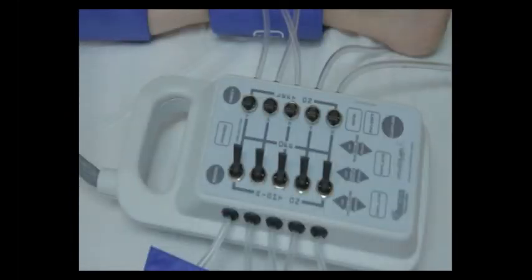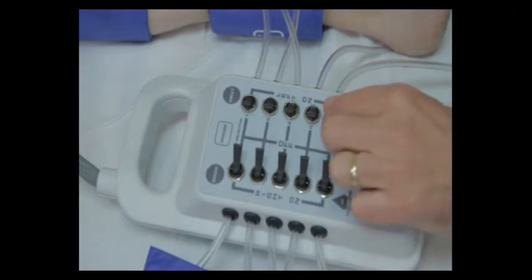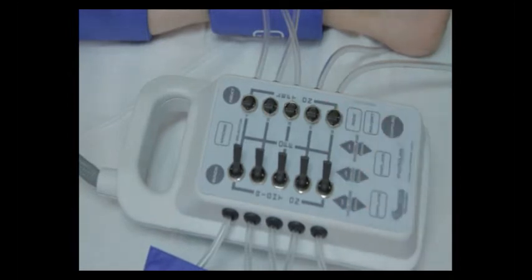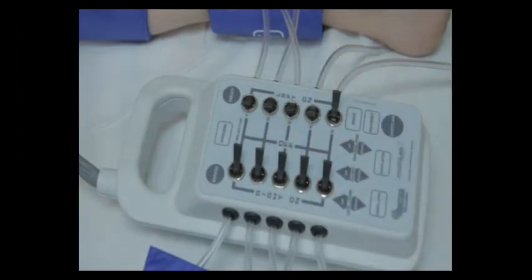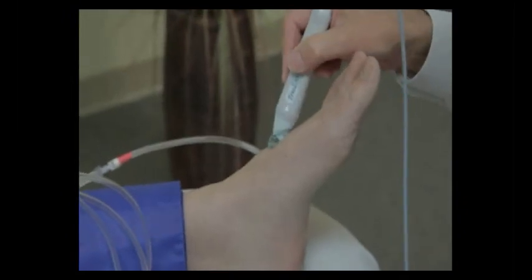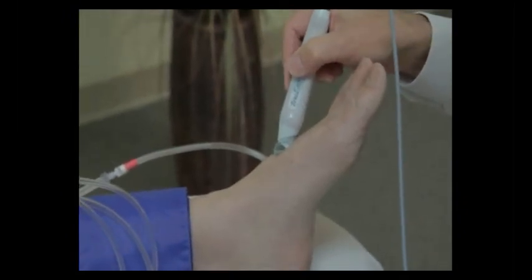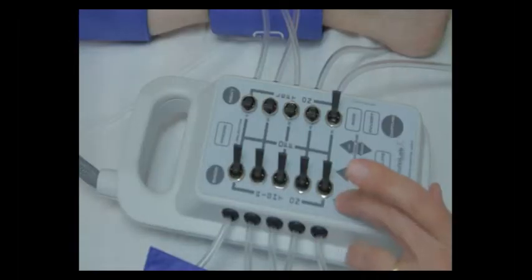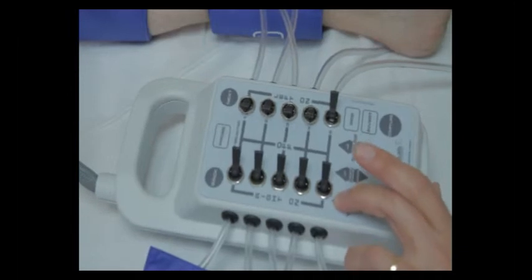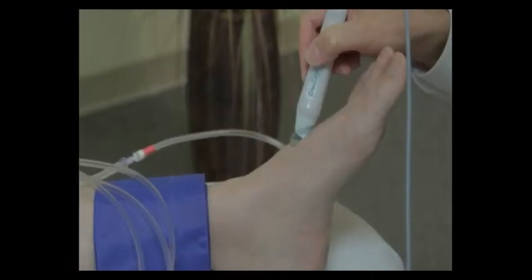When using your multiple cuff selector to obtain pressures, you will use one valve at a time. Right now I'm going to be taking a pressure at the left dorsalis pedis artery, so I'm simply going to open the left number five valve, volume up a little bit, and inflate the cuff.